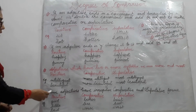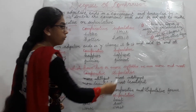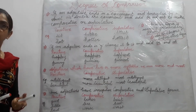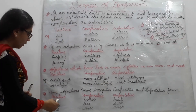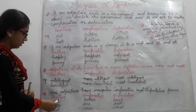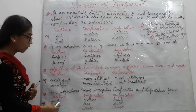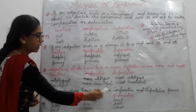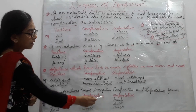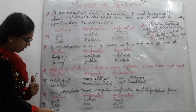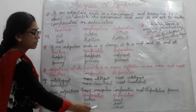Next rule: some adjectives have irregular comparative and superlative forms, which you need to learn. For example, 'good' — better — best. Similarly, 'little' — less — least. Next example: 'bad' — worse — worst.